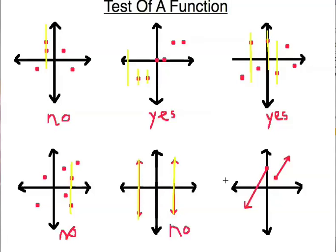Over here it passes the vertical line test, passes, passes, then there's a gap — passes. Even in that gap I'm not passing through more than one point; I'm not passing through any points, but that doesn't matter. And over here it passes. So that passes the vertical line test and yes, it is a function.